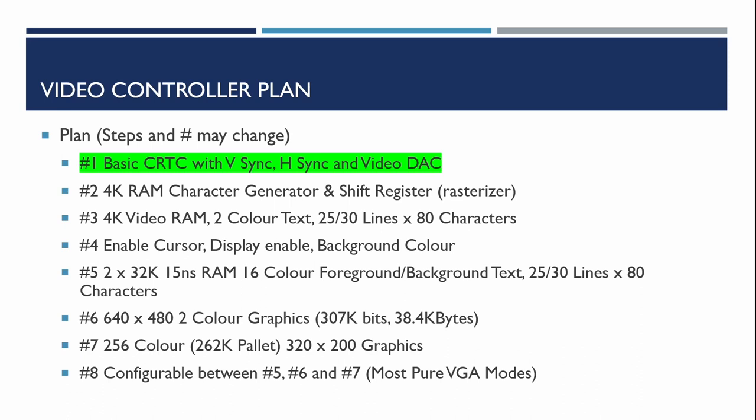In the previous video, which was the introduction to the video controller, we identified this plan — we're on step one: deploying the basic cathode ray tube controller chip. That's a 6845-compatible chip from Hitachi which will generate the vertical sync and horizontal synchronization signals. We'll also build the video digital-to-analog converter to provide the color signals to the computer monitor.